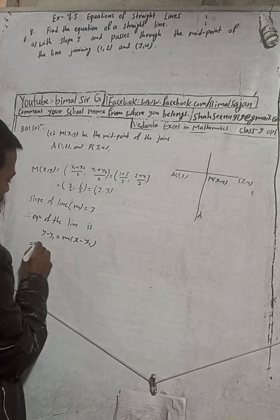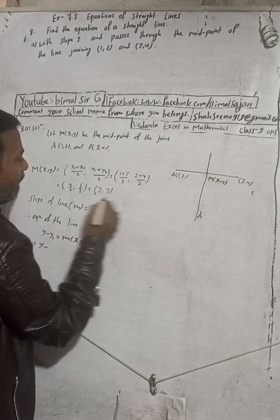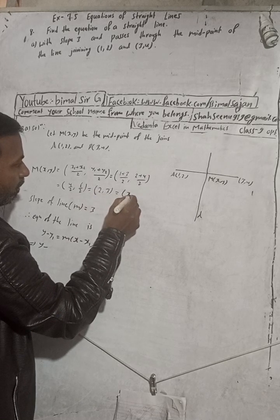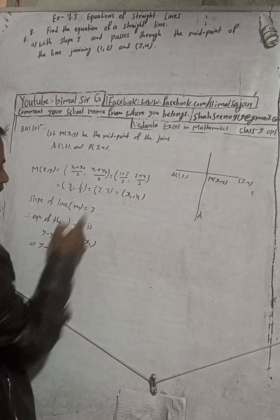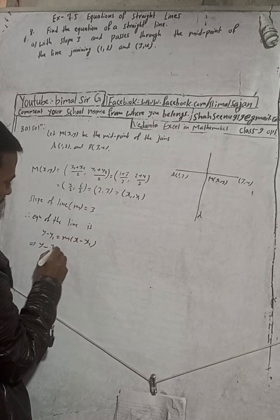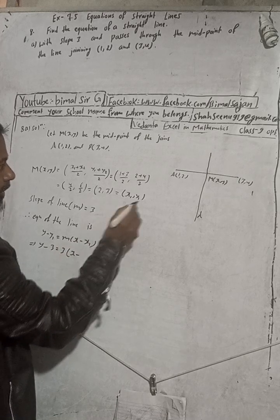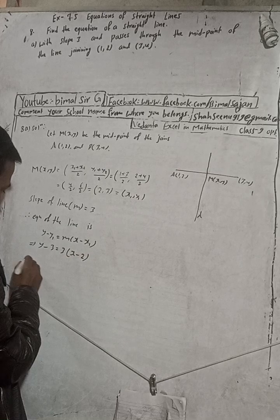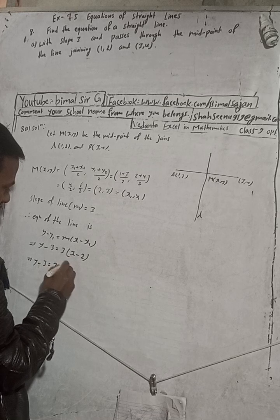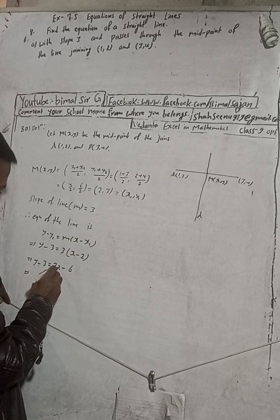Here, the midpoint we found is (2, 3), so x1 = 2 and y1 = 3. Substituting into the point-slope formula: y minus 3 equals 3 times (x minus 2). Expanding: y minus 3 equals 3x minus 6.